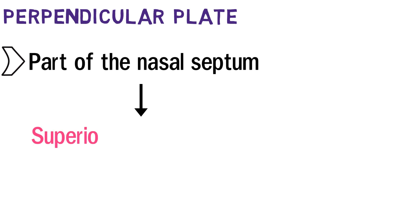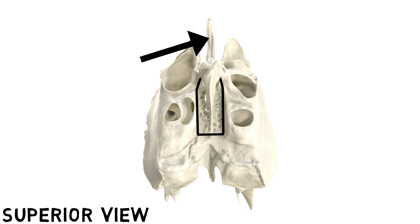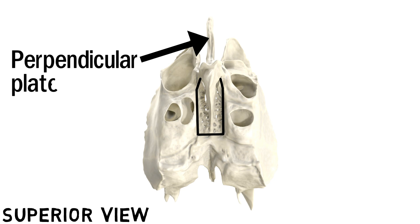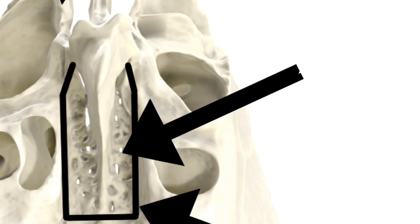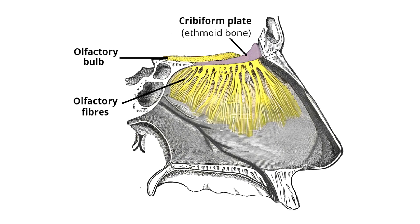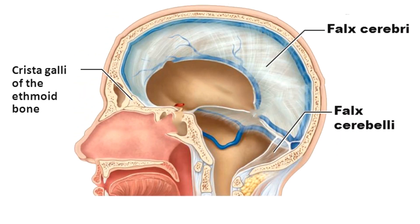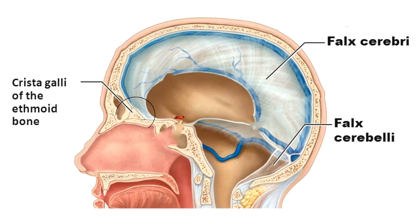The next part is the perpendicular plate. It is part of the nasal septum and forms the superior two thirds of the nasal septum. This is the superior view of the ethmoid bone — this vertical plate is the perpendicular plate. This rectangular area marked in black is the cribriform plate, and as you can see there is this sieve-like structure called the olfactory foramina — this is how the nerve fibers of the olfactory nerve pierce the cribriform plate. In the lateral view, this superior projecting part is the crista galli, showing how it provides the point of attachment for the falx cerebri, the sheet of dura mater.